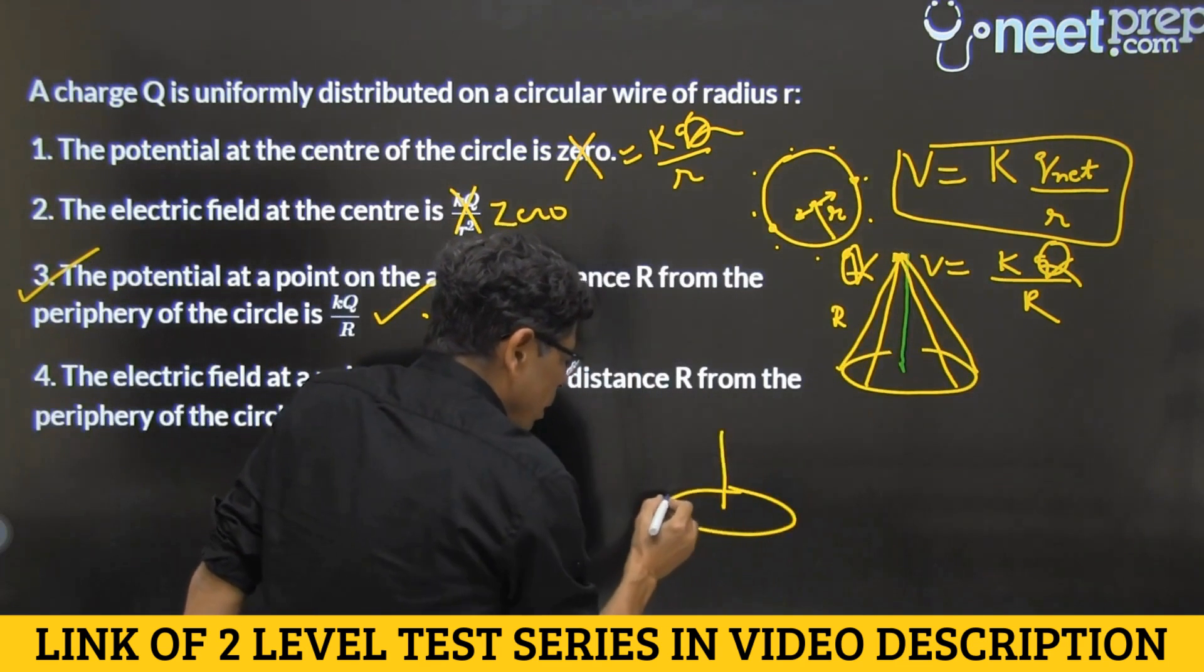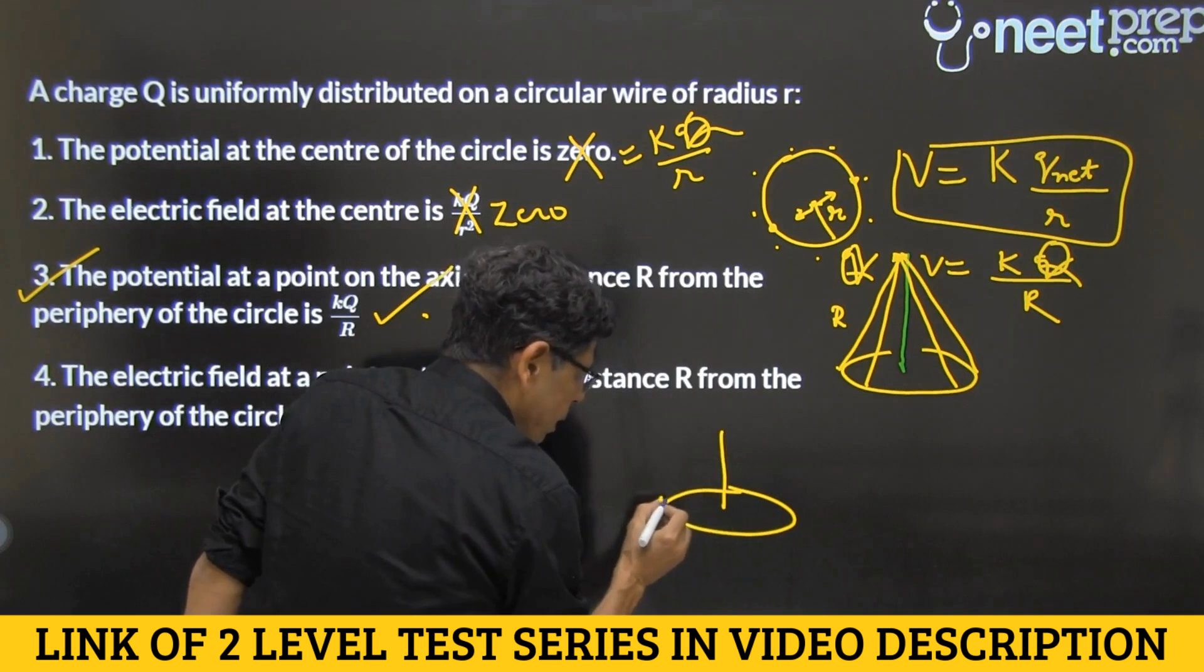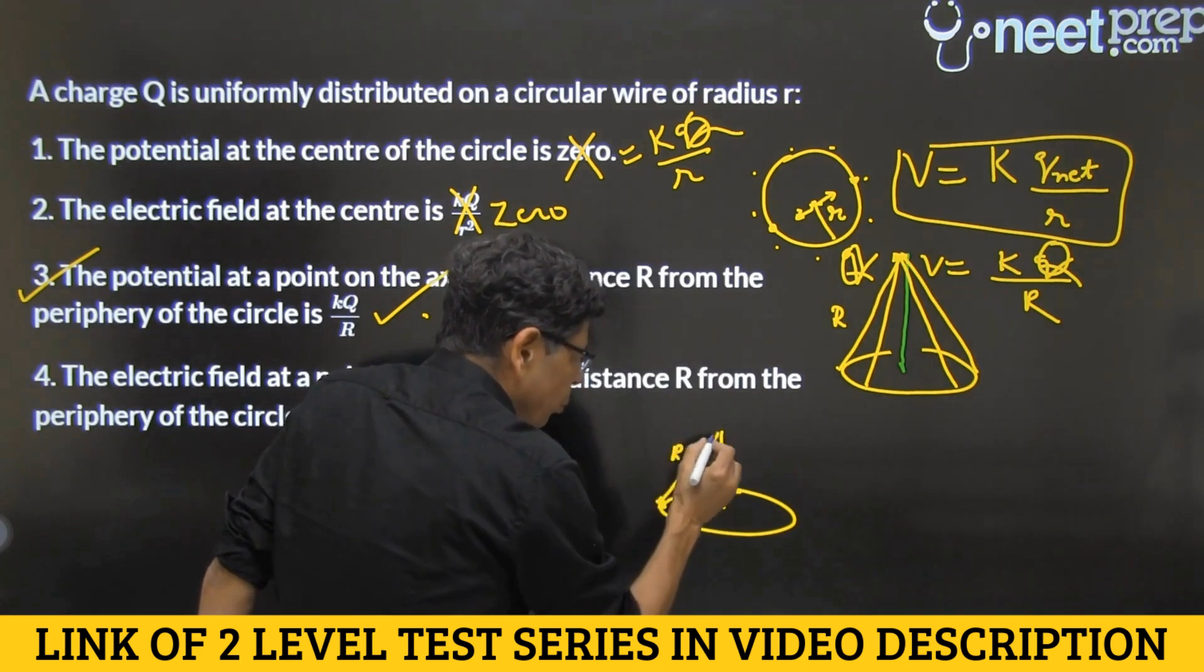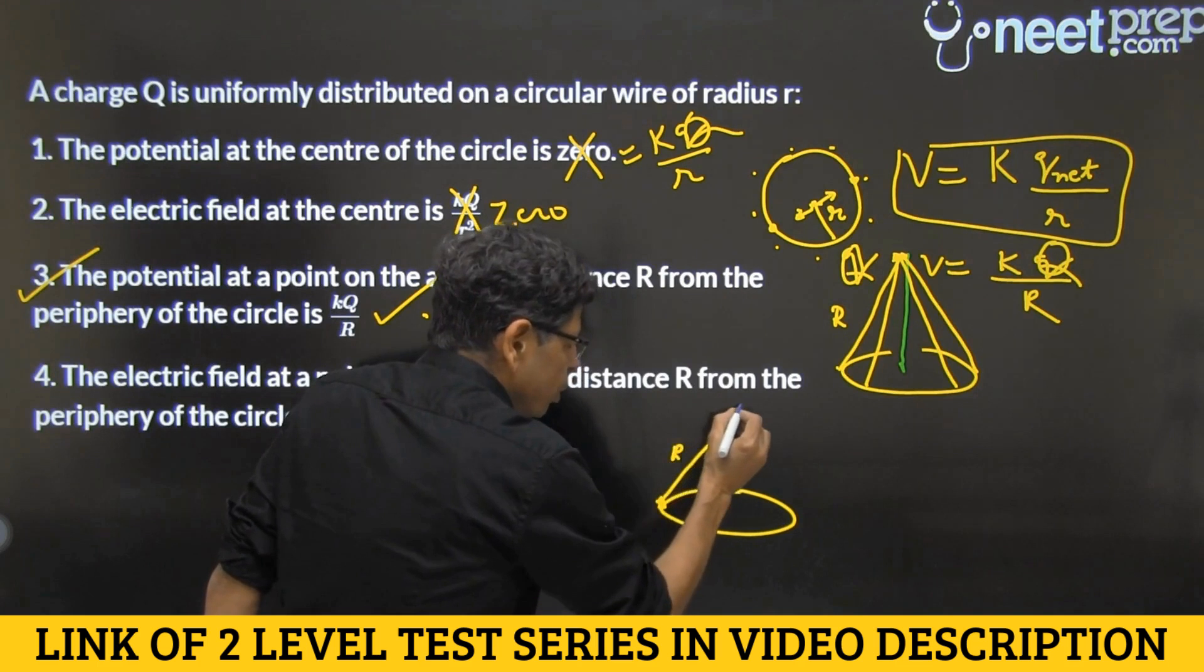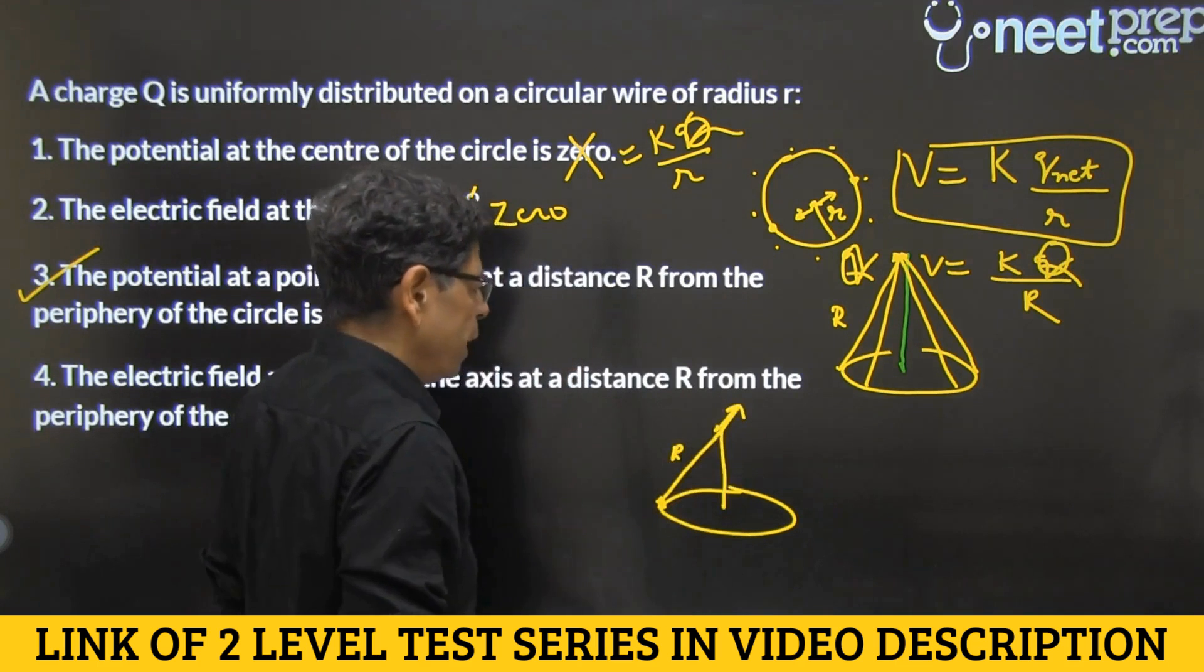So is jagay par, is point ki wajay se, agar yaha par charge q hai, distance r hai, toh electric field hoi, us desha mein and it will indeed be equal to KQ by R square.